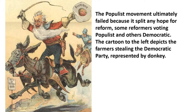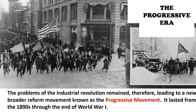The Populist Movement in the late 19th century ultimately failed because it split any hope for reform — some reformers would vote Populist and others Democratic. A cartoon depicts farmers stealing the Democratic Party represented by the donkey. The problems of the Industrial Revolution remained, and what was going to happen is it would lead to a broader reform movement known as the Progressive Movement, which lasted from the 1890s through the end of World War I.